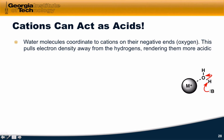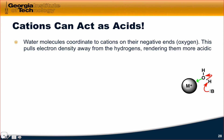Cations can also act as acids. The molecular details are a bit more complicated, but it's a fairly intuitive idea once we understand what's going on. When a cation is solvated by water molecules, the water molecules coordinate to the cation at the oxygen atom, where the oxygen is pretty tightly bound to the M⁺ cation. This pulls electron density away from the hydrogen atoms, rendering them more positive and more acidic.